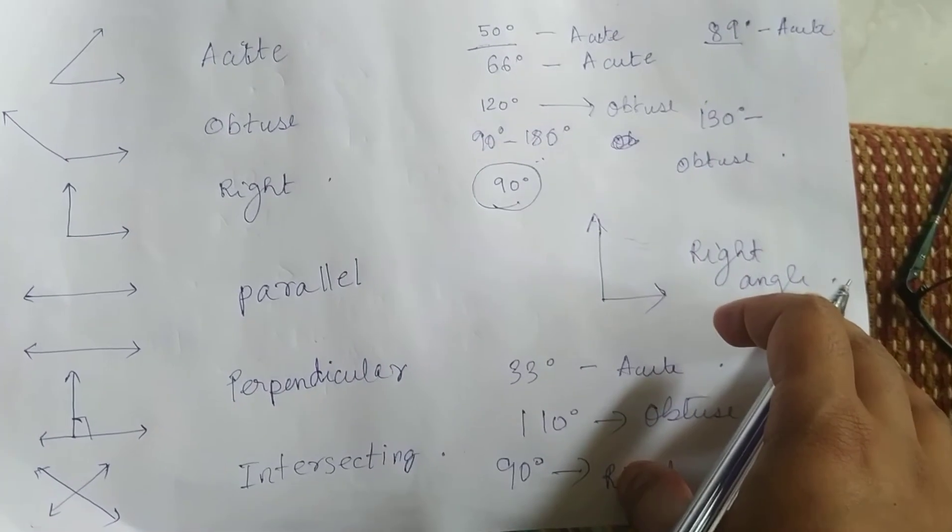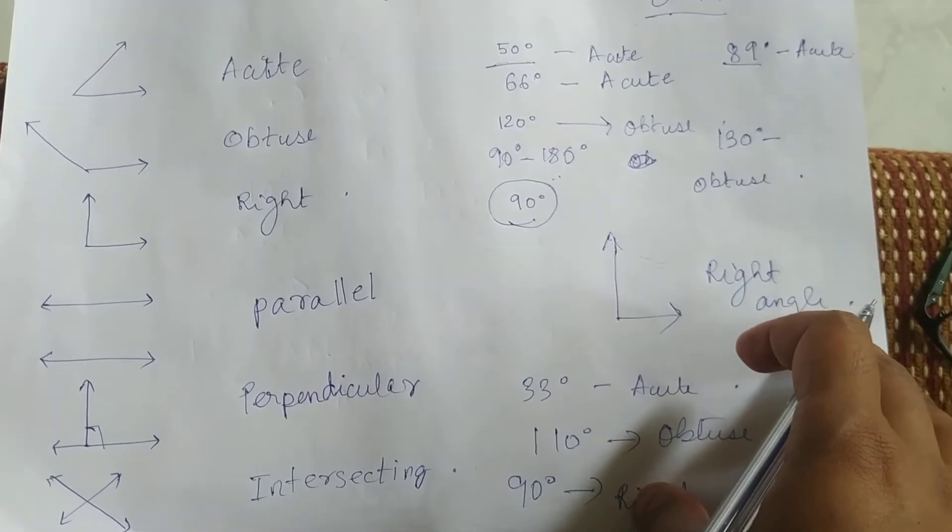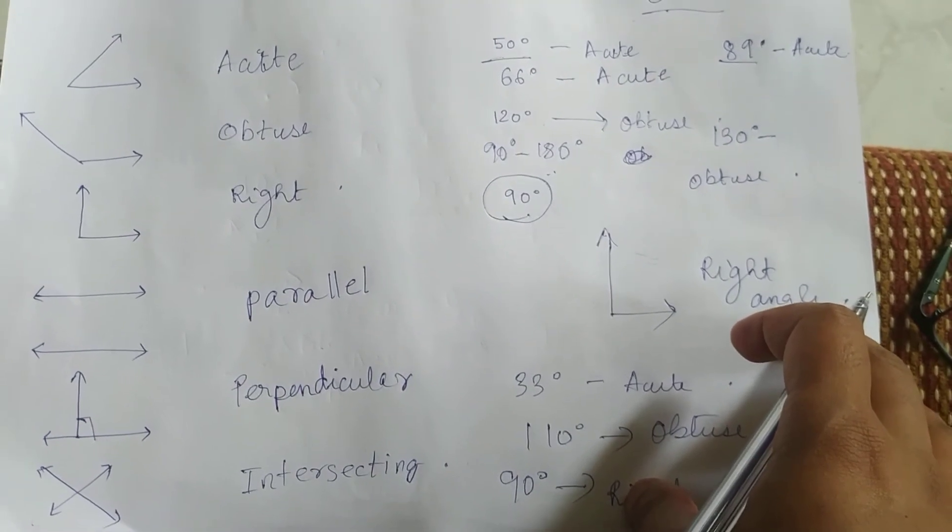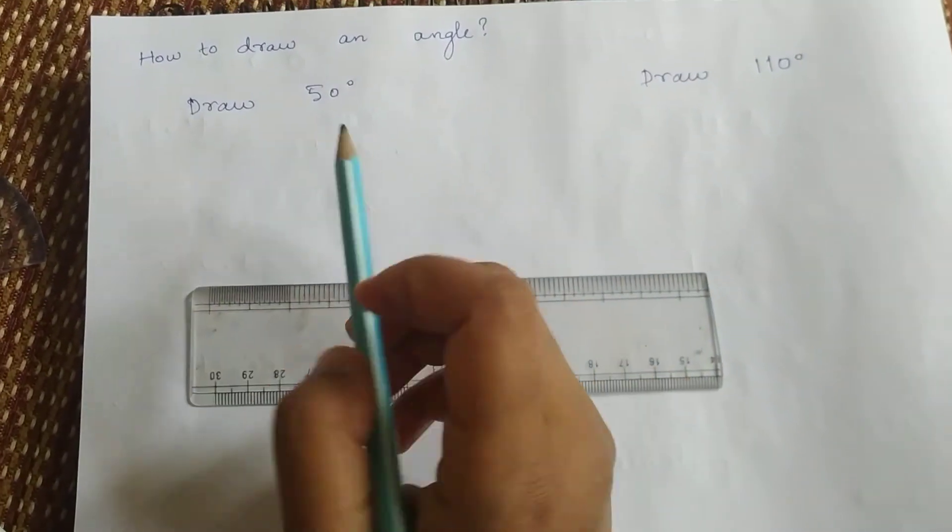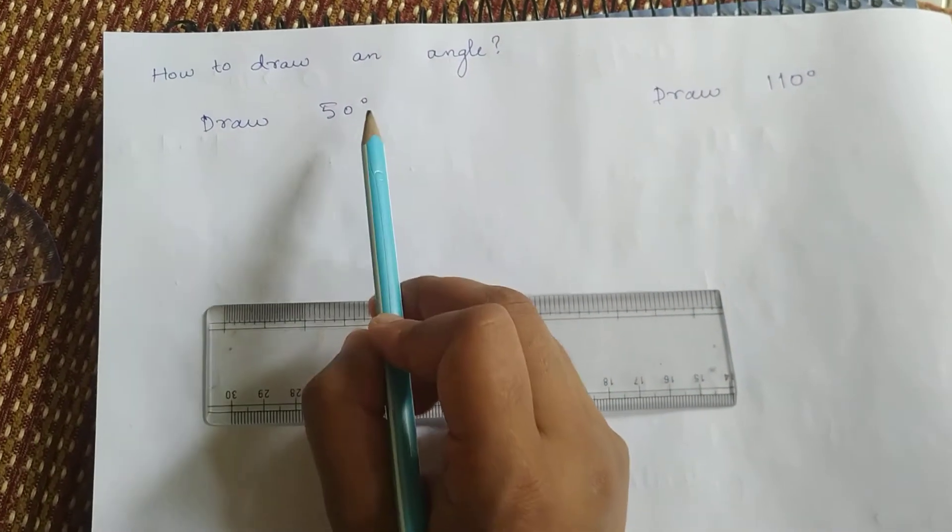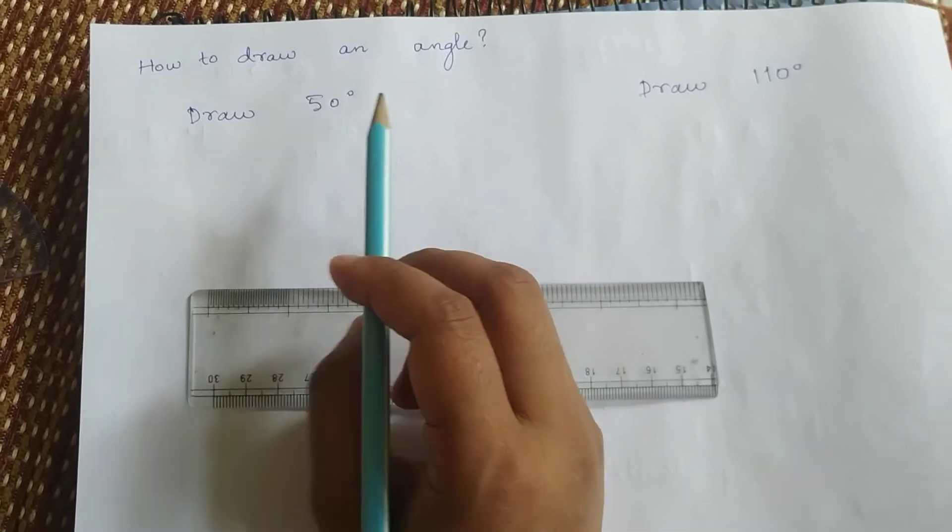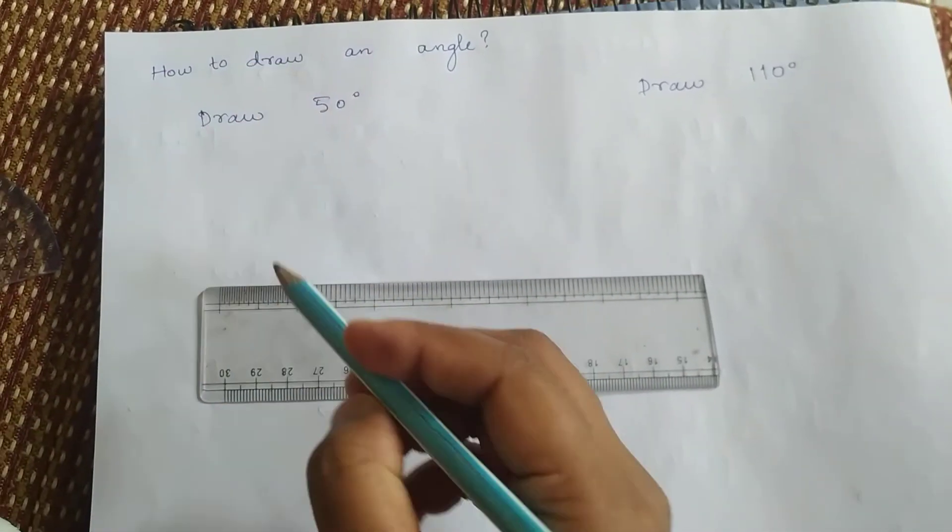Now finally, let's move on to the last part. That is drawing an angle. How do we draw an angle? It is very simple. Let me show you that. To draw an angle, first let's see, to draw 50 degrees. The first step is to draw a line. You have to draw one line.